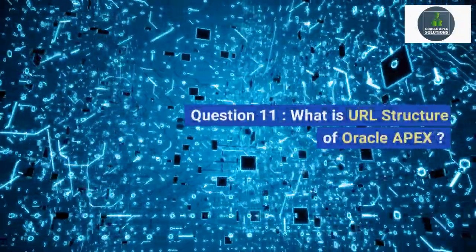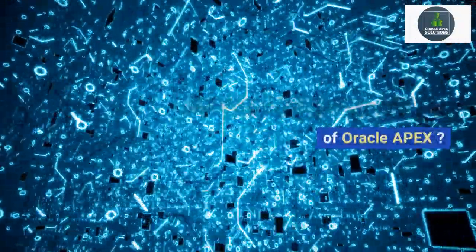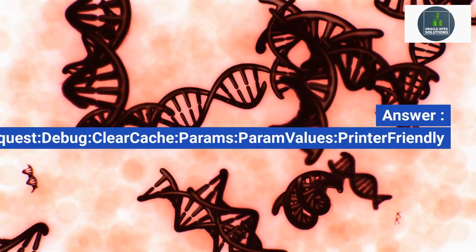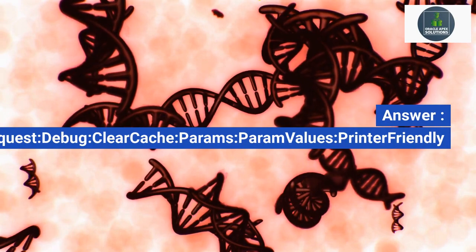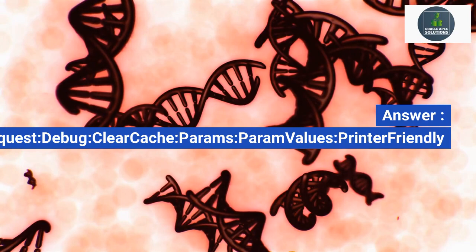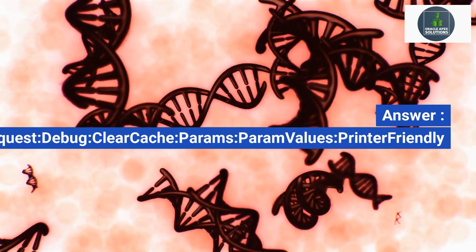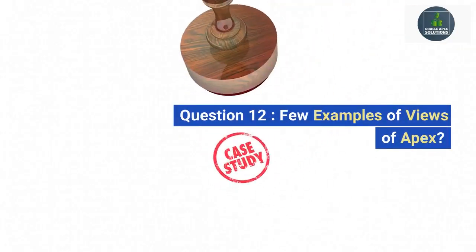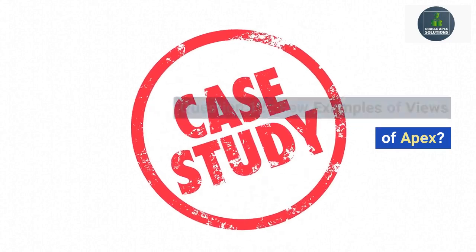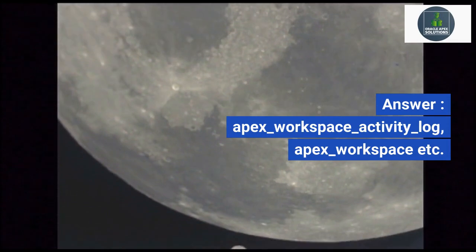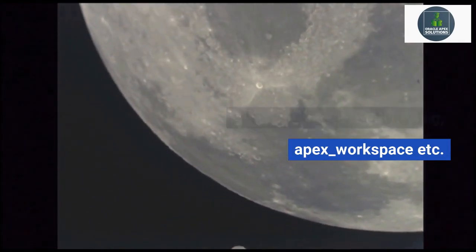Question 11: What is the URL structure of Oracle APEX? Answer: http://apex.oracle.com/pls/apex/f?p=appid:page:session:request:debug:clear_cache:params:param_values:printer_friendly. Question 12: What are a few examples of views in APEX? Answer: APEX_WORKSPACE_ACTIVITY_LOG, APEX_WORKSPACE, etc.